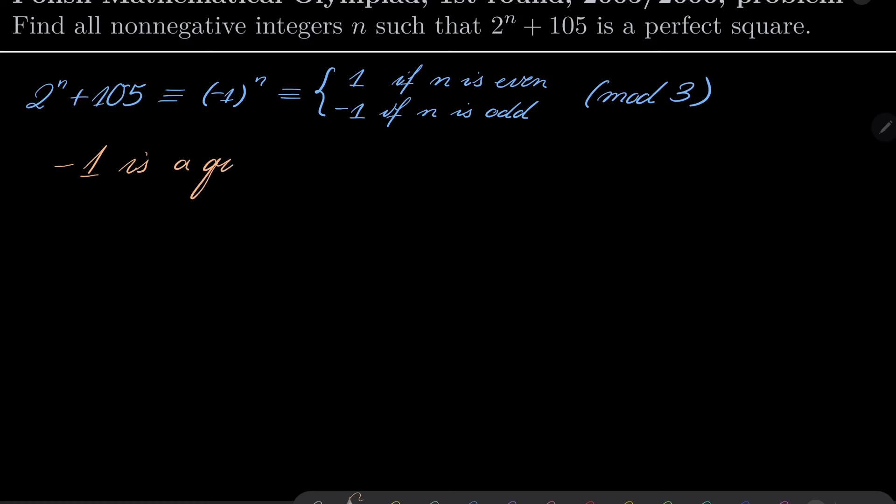But notice that minus 1 is a quadratic non-residue modulo 3. So, since we wish to have a perfect square, we know that n must be even.